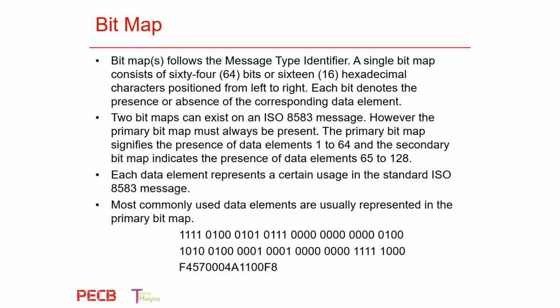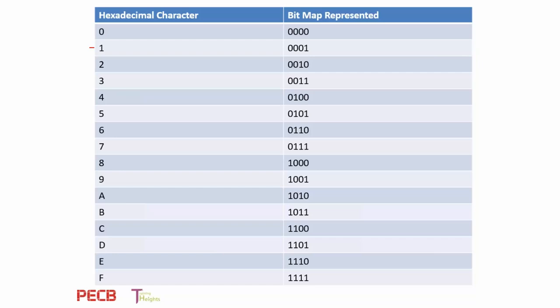A single bitmap consists of 64 or 16 hexadecimal positions. It follows positions 1 to 64, and the secondary bitmap uses positions 65 to 128. Each of them has got to be aligned. The most commonly used data elements are usually represented in the primary bitmap. You have your on state and your off state, and sometimes it's represented in hexadecimal. A lot of these things are shielded from users — people who study computer science and are comfortable with binary conversion will understand this hexadecimal character to bitmap representation.